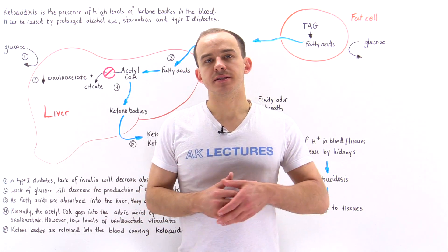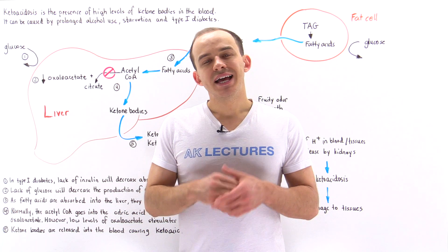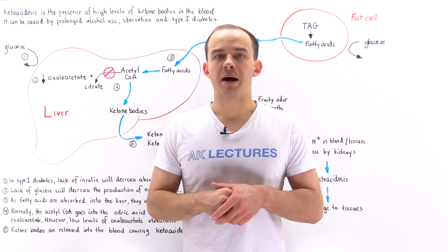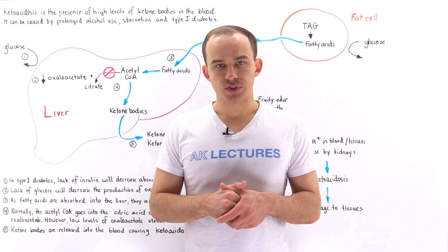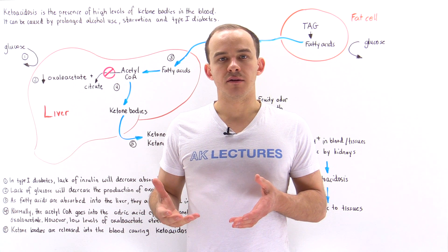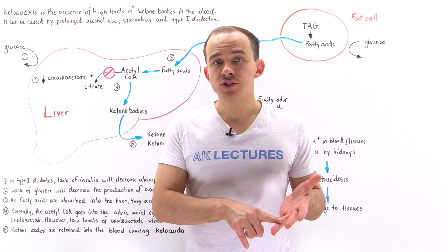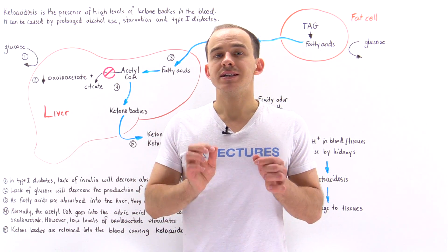As alluded to in the previous lecture, here we're going to focus on ketoacidosis. Ketoacidosis simply means we have high levels of ketone bodies inside our blood. What causes ketoacidosis? It can be a result of prolonged alcohol consumption, malnutrition or starvation, but what we're going to focus on in this lecture is diabetes.